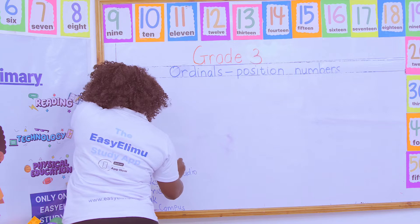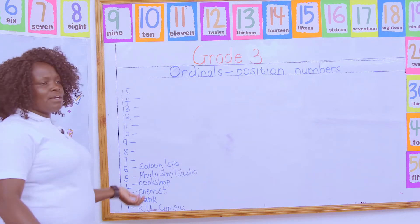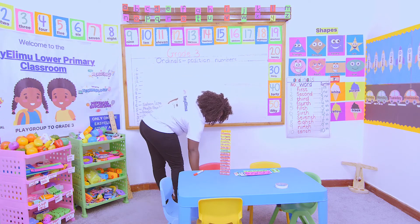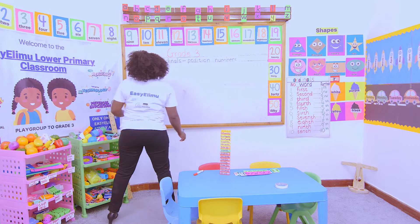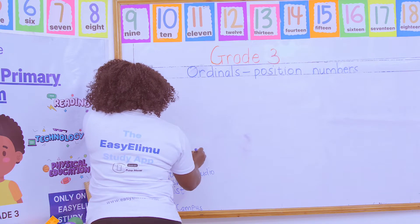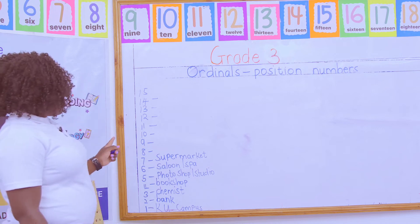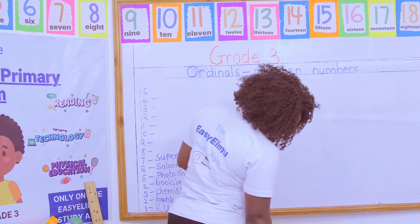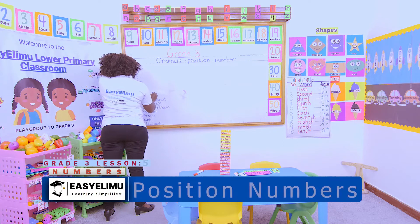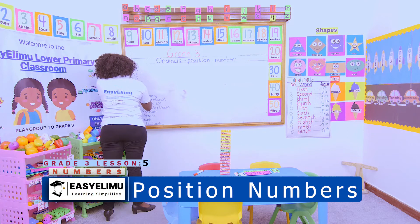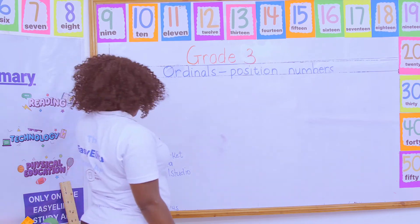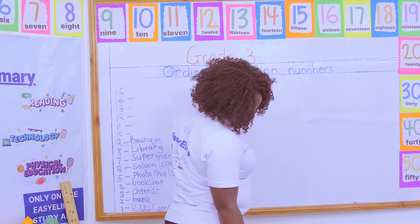The sixth floor had a salon and spa. This is where massage is done, hairdressing, barbershop — everything is found on the sixth floor. The seventh floor had a supermarket. I don't know what they thought putting a supermarket up there, but maybe they knew the reason. The eighth floor had a library, where people can read so many books.